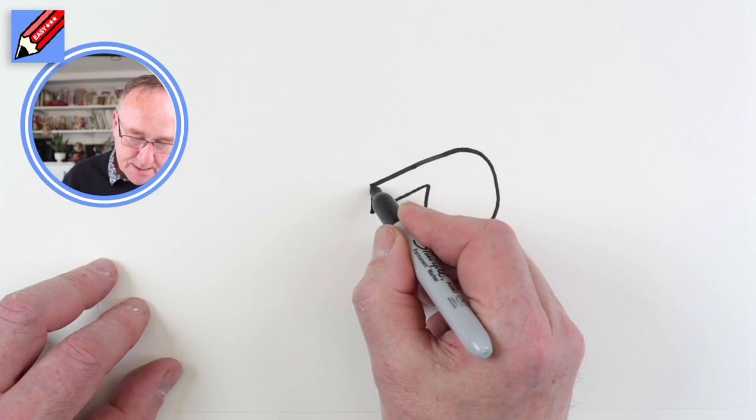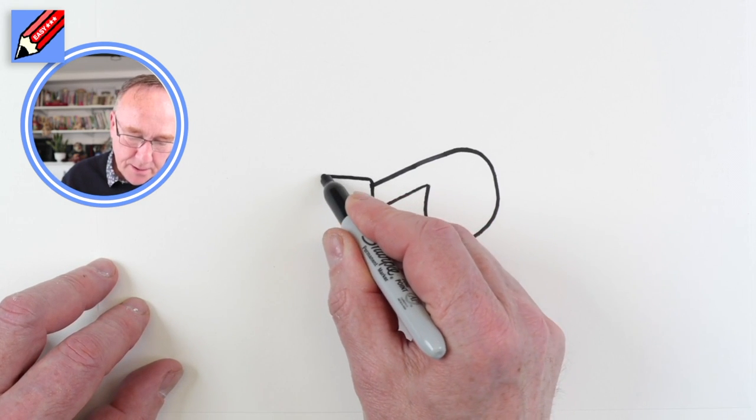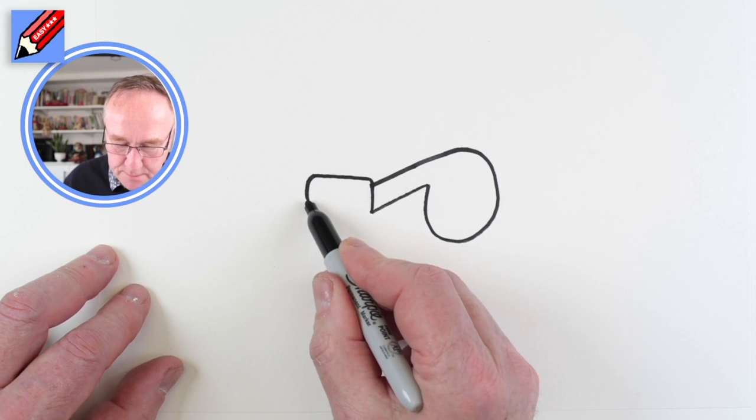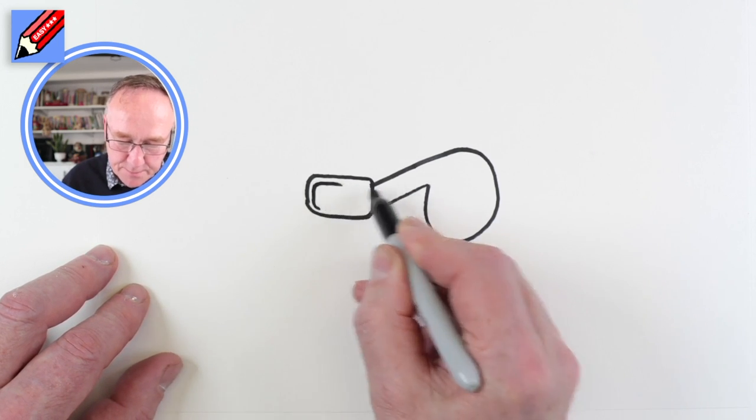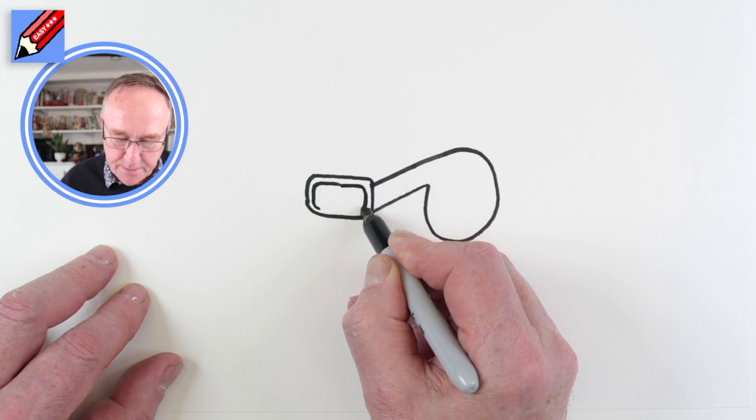Then we want to come up slightly higher and then across and down. So we want to go slightly lower than that point and we're going to go around like that.